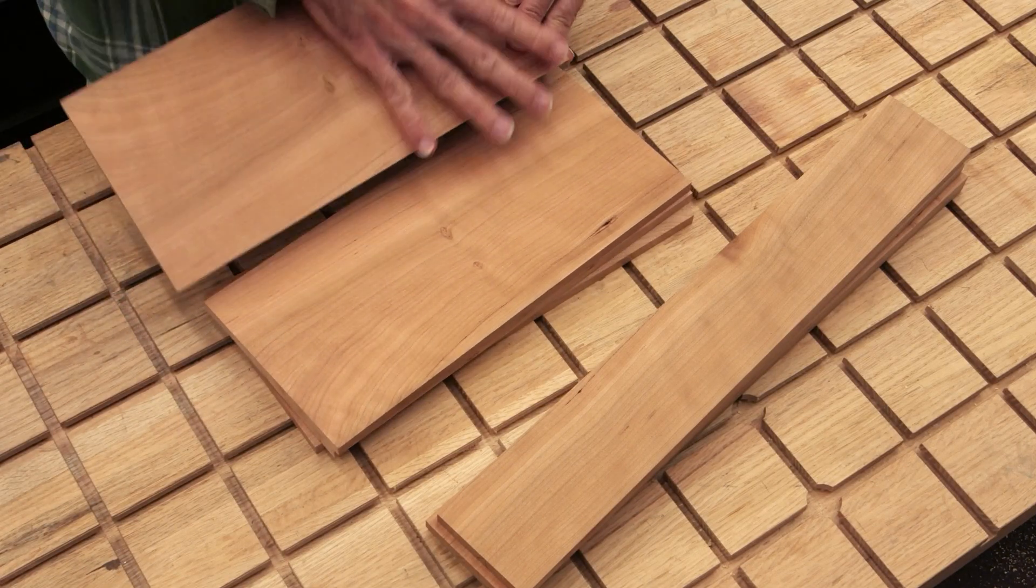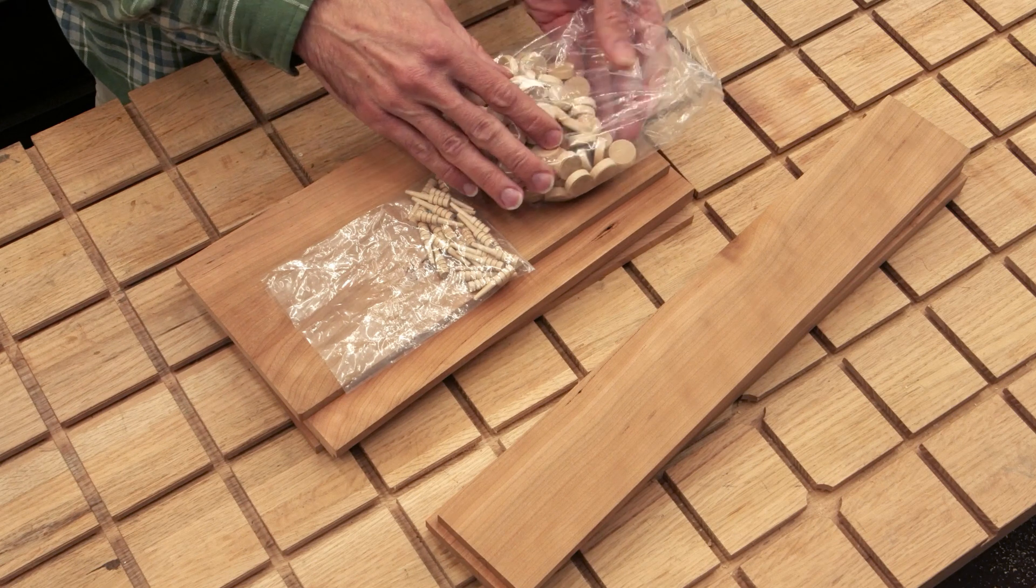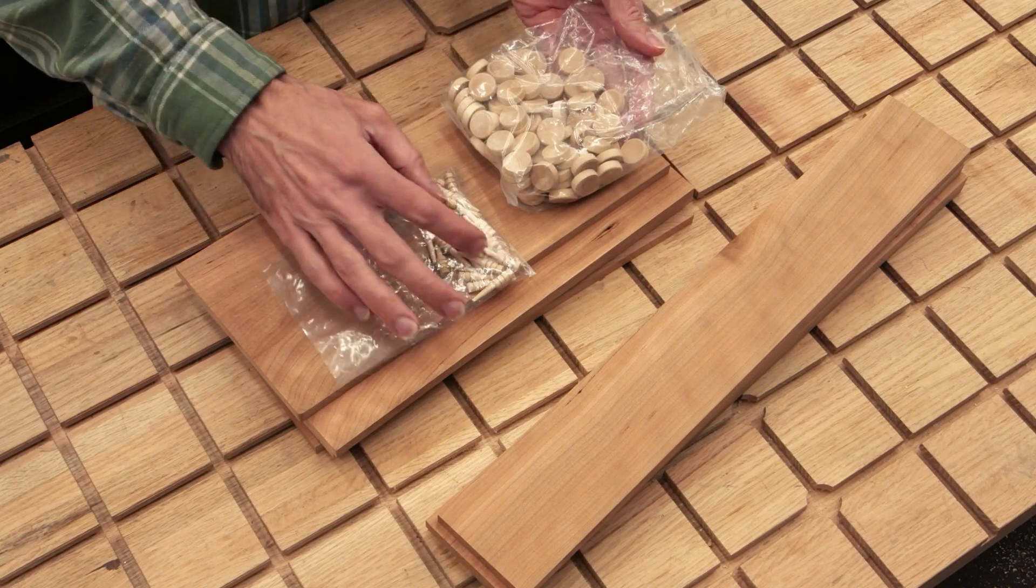Well that wraps up part one. I've got all my cherry stock cut to size, milled down, ready to go for the game boards and also for the side pieces of the boxes. And I've also got my CNC program tested out for cutting the inlay points of the backgammon board. So that's all looking pretty good. In part two I'm going to do the colored inlay on the backgammon boards. So I'm going to mix up colored epoxy and mica powder and inlay it onto the board surfaces in the pockets that I cut with the CNC.